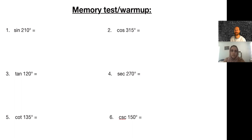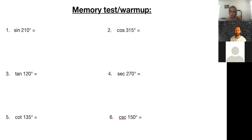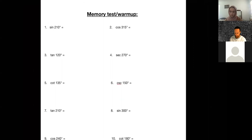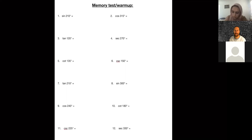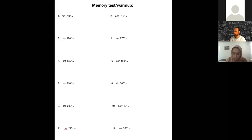I wanted to give you guys a quick warm-up on everything we went over last time. Remember, I told you all to memorize the big three reference angles — the 30, 45, and 60 — with the big three trig functions: sine, cosine, and tangent. If you also know the cosecant, secant, and cotangent, even better, but remember they're just reciprocal functions. I'm giving you about 12 problems. If you're watching the video, pause it here and try them without your notes.